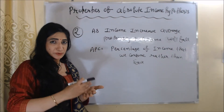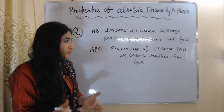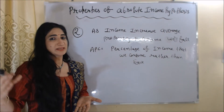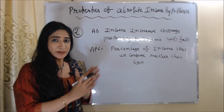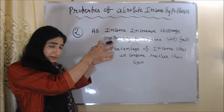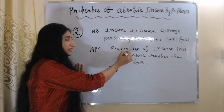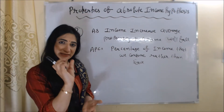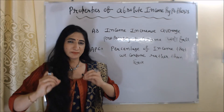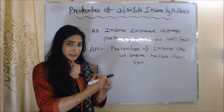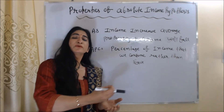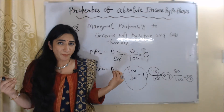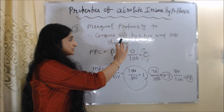The second property is that as income increases, the average propensity to consume will fall. As we know, the average propensity to consume is the percentage of income that we consume rather than save. According to this hypothesis, as income increases, the percentage of income we consume falls, because at a certain point our needs are fulfilled and we start saving more.